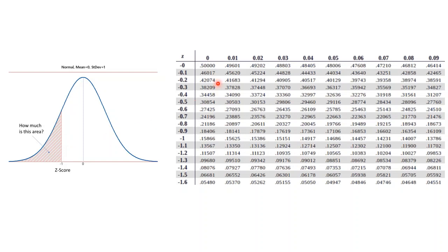For this table, the top row and the first column correspond to z values, and all the numbers in the middle correspond to areas. For example, according to the table, a z-score of negative 1 has an area of 0.15866 to the left of it.